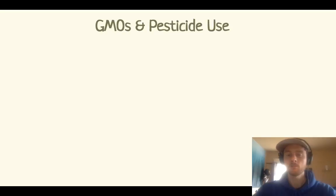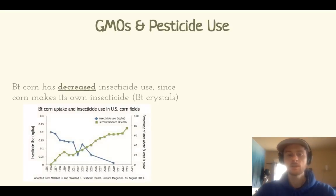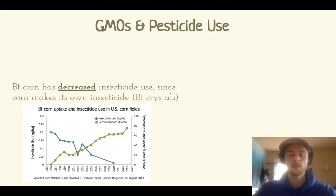Regarding the impact of GMOs on pesticide use: in the case of BT corn, it has actually decreased the amount of pesticide used, as shown in a graph. The corn manufactures its own insecticide — BT crystals — so pests that try to eat it die. As BT crop acreage percentage rises (shown in green), insecticide use (shown in blue) steadily goes down. They have an inverse relationship, so in this case GMOs can decrease pesticide use.